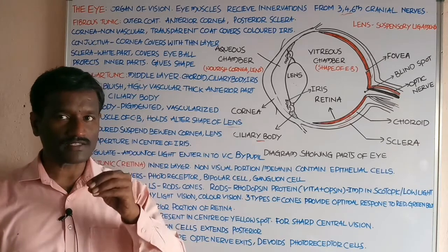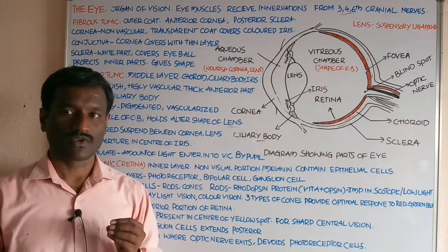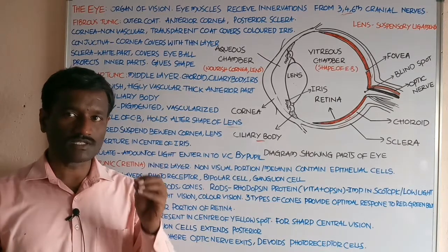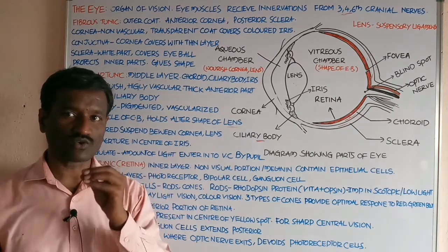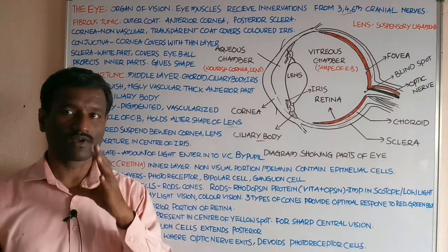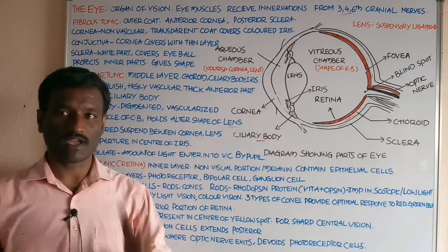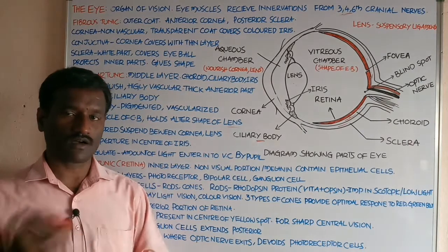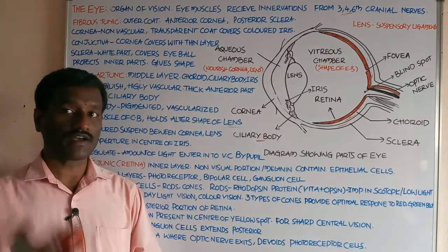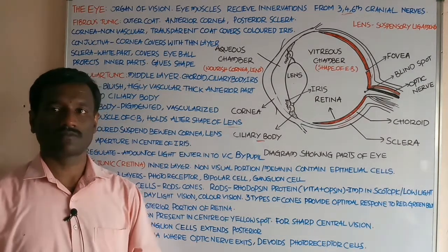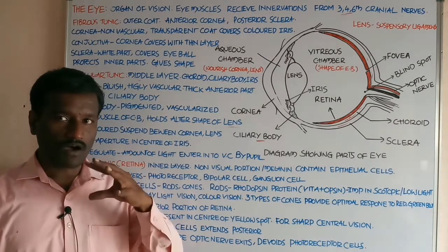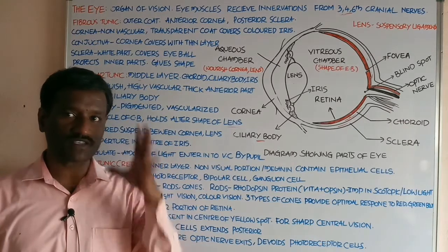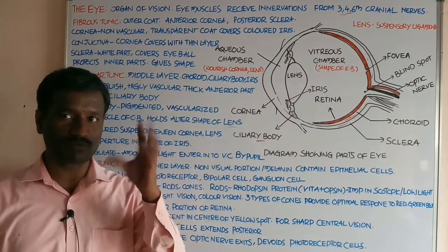Lacrimal glands secrete lacrimal fluid called tears, which consist of salts, mucus, and lysozyme enzyme, which kills microorganisms that enter into the eyeball. The eyeball is also associated with extrinsic muscles — six types of muscles. These eye muscles receive innervation from the third, fourth, and sixth cranial nerves.